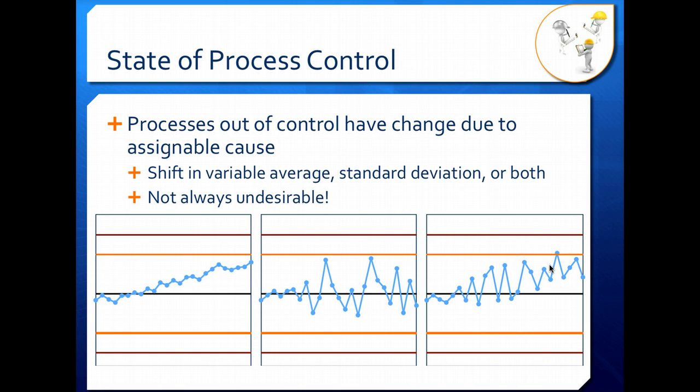Now this type of change is not always a bad thing. For example, if your average range of your product is going down, that's good—that means your process is getting more consistent. If you have a shift in the standard deviation that is down, that's also good—that means your process is again getting more consistent.